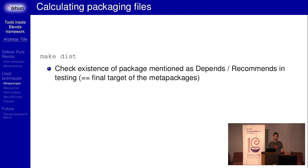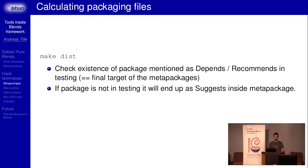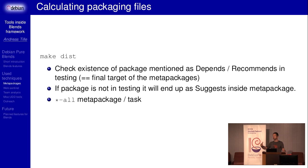Once you have defined all this, you just run 'make dist' to create a source tarball, and this does all the useful stuff. If a package is not in testing it goes to suggests, as I said. There is also one meta package called 'all' which has a special meaning. The final purpose is that we want to get blends into the Debian installer — which is not yet the case. I have an open bug from 2003, so 15 years ago. We really hope this will happen for the Buster release.